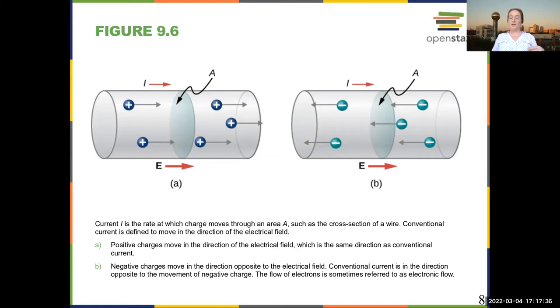If your charge carriers are negative charges, then if the field goes to the right, your charge carriers are going to the left, and the current is going to the right. So the current is going in the opposite direction of the charges.